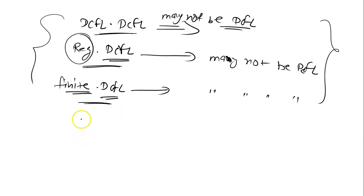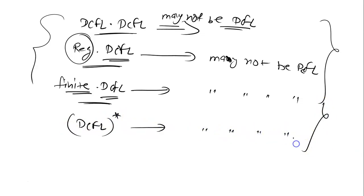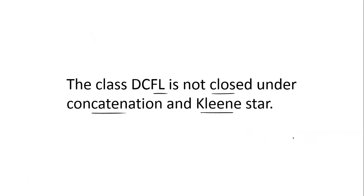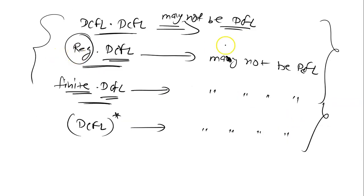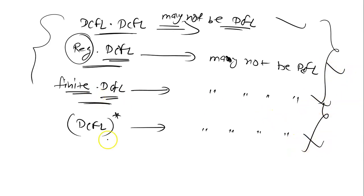So we have shown that the Kleene star of a DCFL may not be DCFL. The class of DCFL languages is not closed under Kleene star operation. To summarize all results: DCFL is not closed under concatenation; DCFL is not closed under concatenation with regular languages; DCFL is not closed under concatenation with finite languages; and DCFL is not closed under Kleene star operation.